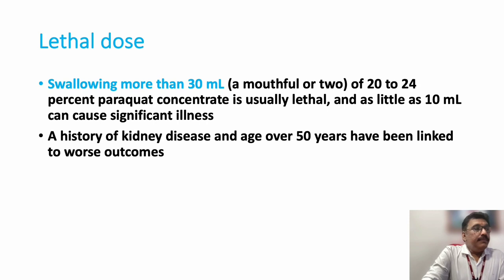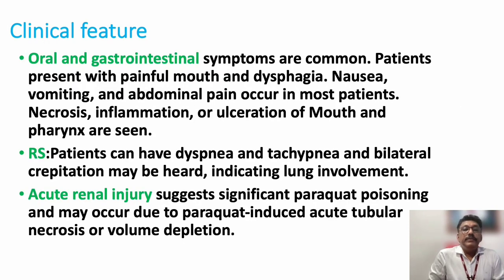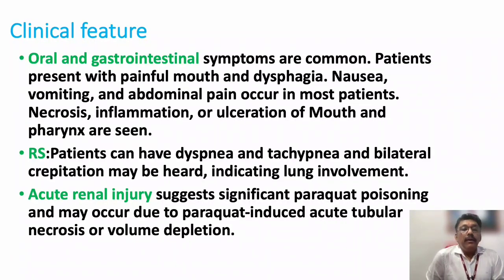If the patient already has renal failure — such as diabetic nephropathy or chronic renal failure — age is also a factor; removal of paraquat will take a longer time, which aggravates the poisoning. The oral and gastrointestinal features are predominant: nausea, vomiting, abdominal pain, and oral necrosis — tissue necrosis, inflammation, and ulceration of the mouth and pharynx.